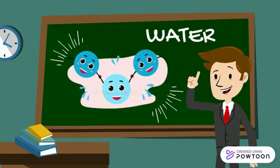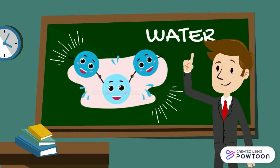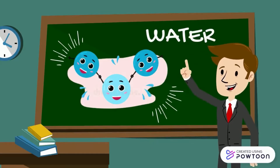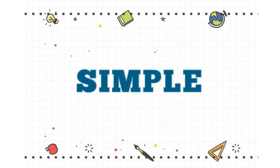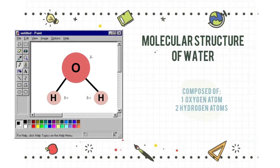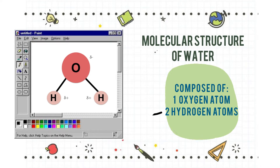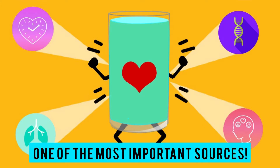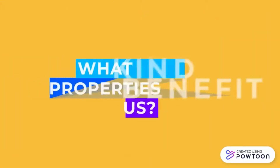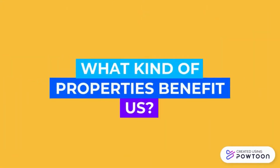Hello everyone! In this video, we would like to talk about water properties and what makes them so unique. As we all know, water has a very simple molecular structure that is composed of one oxygen atom and two hydrogen atoms. Water also benefits us in so many ways that it becomes one of the most important sources in our life. So, what kind of properties benefit us? Let's find out!